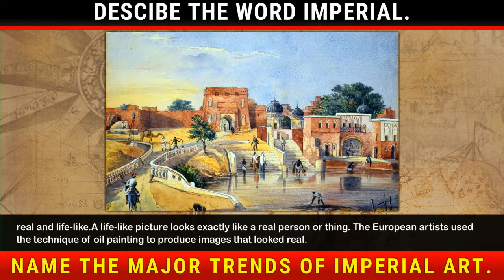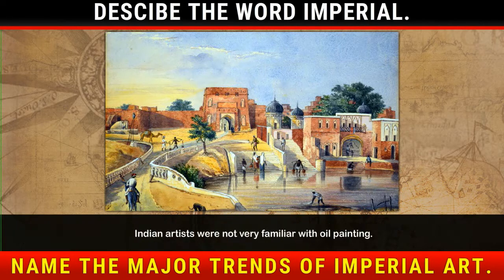The European artists used the technique of oil painting to produce images that looked real. Indian artists were not very familiar with oil painting.